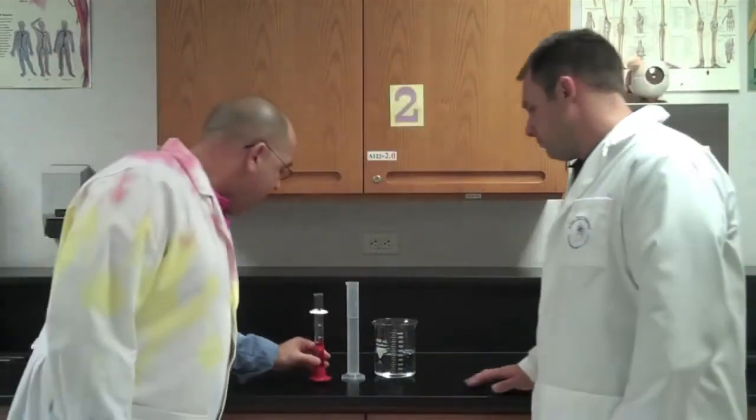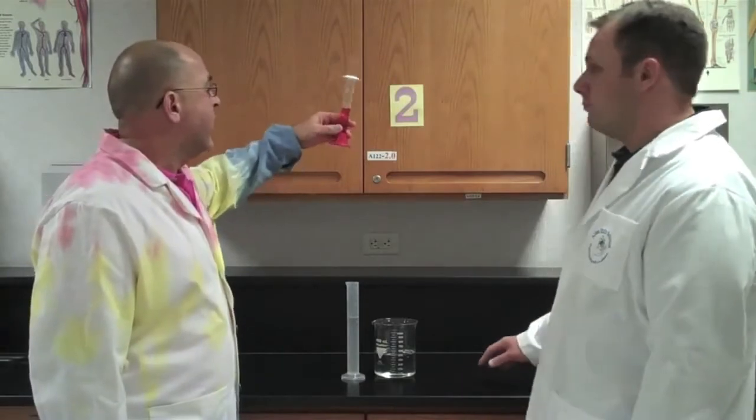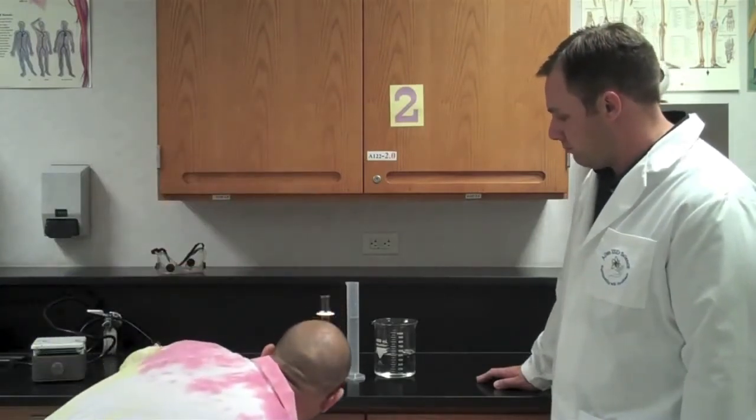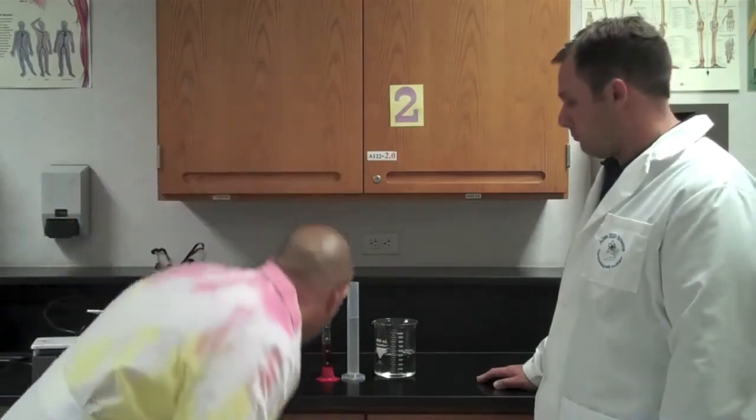But you never, ever pick up the graduated cylinder to read the volume because the water is going to tilt. So to read the volume of this, you're going to be at eye level. Now, you're going to see a curved line. It's called the meniscus. To read the correct volume, you read the bottom of the meniscus.